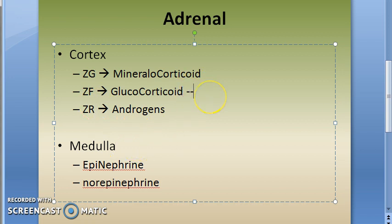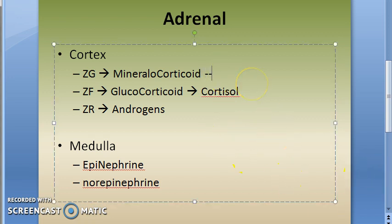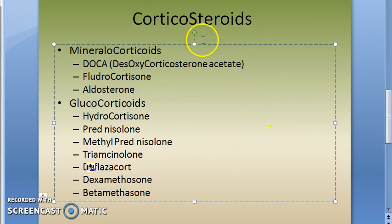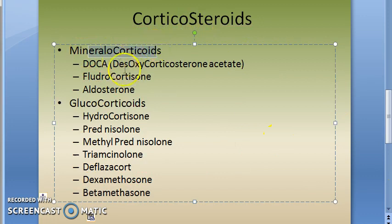Glucocorticoid examples are cortisol, corticosterone, cortisone, etc. Mineralocorticoid example — can you give? Aldosterone. If you know this much, we can move on to some corticosteroids. Let's see mineralocorticoids.